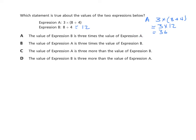Let's look at choice A: the value of expression B, that's twelve, is three times the value of expression A. Well, B is not three times thirty-six — three times thirty-six would be one hundred eight. So that's not true. Choice B: expression A, thirty-six, is three times the value of expression B. That one's true, because if I take expression B and multiply it times three, I get thirty-six. So that's the correct answer, but let's also discuss the other ones.